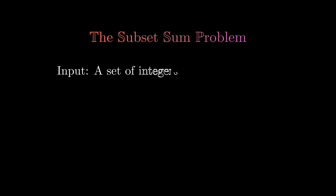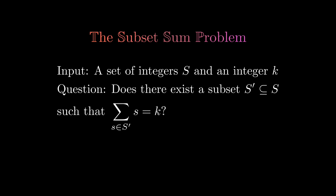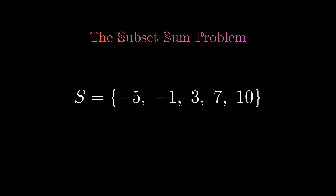The subset sum problem is a decision problem where the input consists of a set of integers S and an integer k. The question is: does there exist a subset of S such that the sum of the integers in this subset is equal to k? For example, suppose this is the set S we are given, and the integer k is equal to 12. This instance of the subset sum problem has a solution, since the sum of the elements negative 1, 3, and 10 equals the target value 12.